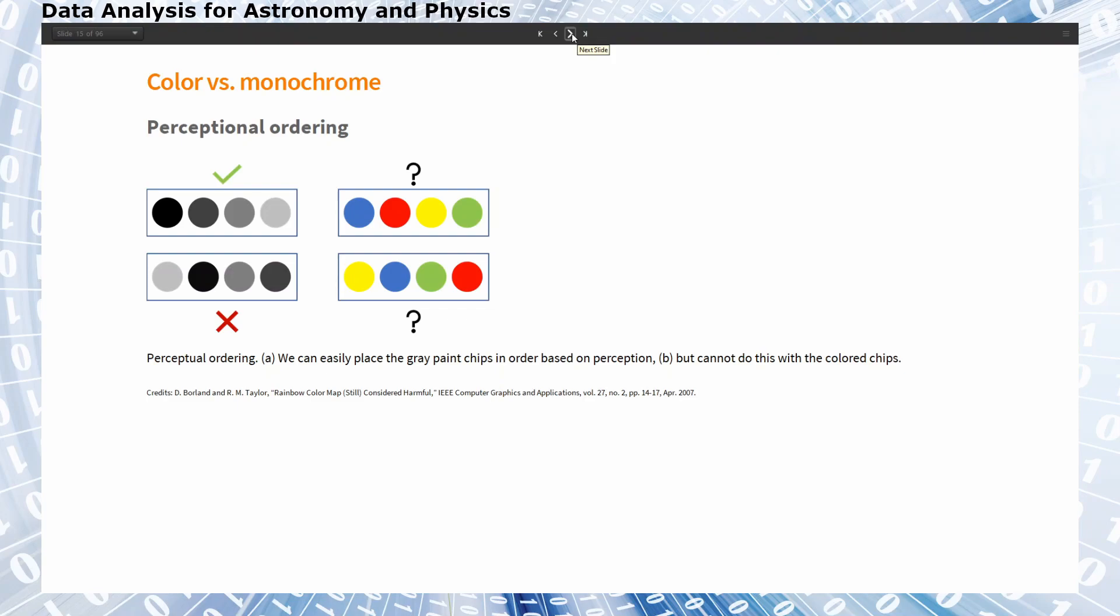Something that is very easy if we have a change, for example, in gray level. It is very easy to put the black and gray disks in a certain ordering or spot when they are unordered. And it is not possible in the colored disks on the right hand side because there is no inherent ordering between blue, red, yellow and green.